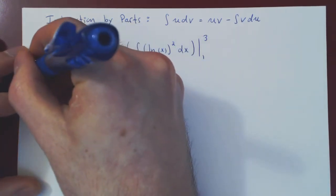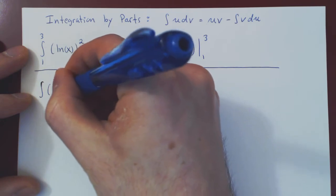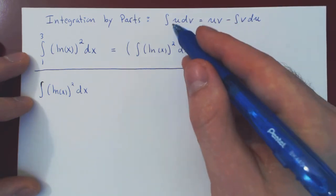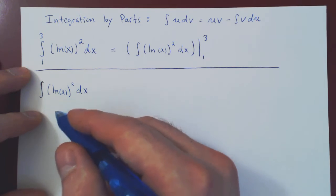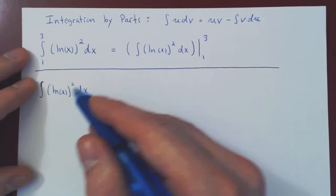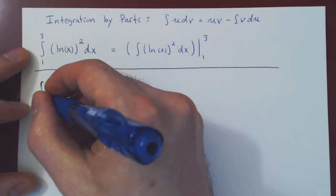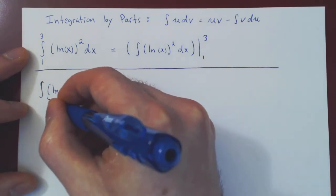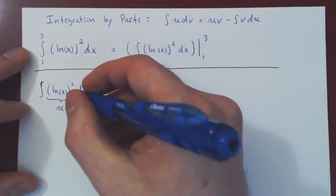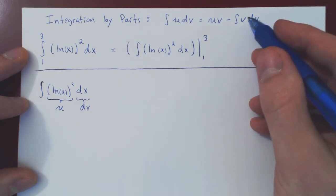We have the integral of (ln x)² dx. The whole thing must be u dv. There's not much of a choice for u. You could break down (ln x)² as ln x · ln x, but if you let u be simply ln x, everything else would be dv = ln x dx, and that's not easy to integrate. So you're better off taking everything to be u — that is, u = (ln x)² — and everything else, dx, must be your dv.